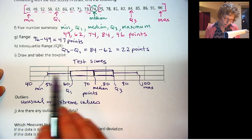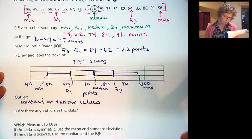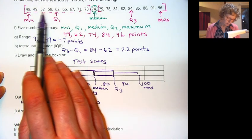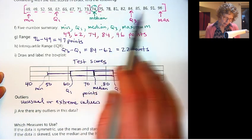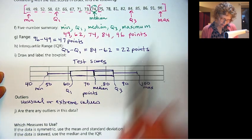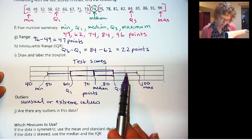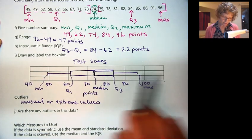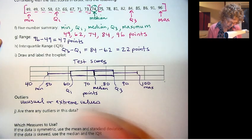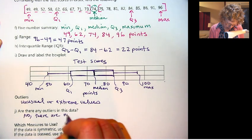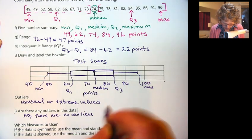For right now, it's a little bit subjective. Does it seem like any values are extremely far away from the others? Let's go back to the data. 49 is not that far from 52, 58, it kind of goes up gradually. And then 86, 91, 96. I don't know if I would say the 96 is an outlier, although it is a little far away from the 91, but this all seems pretty reasonable. It doesn't seem excessively far away. So I'm going to say no.